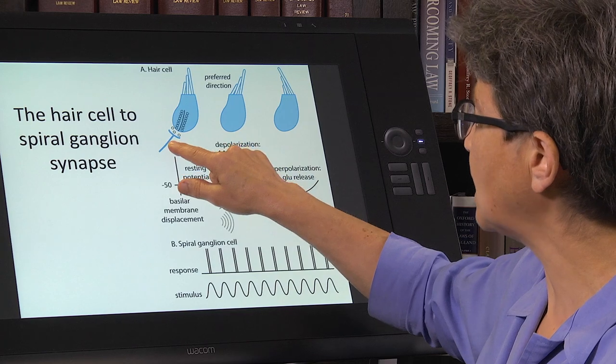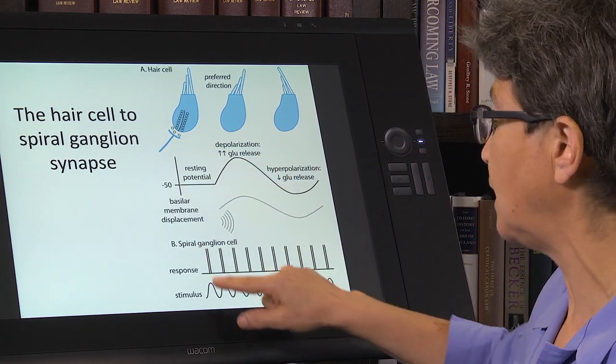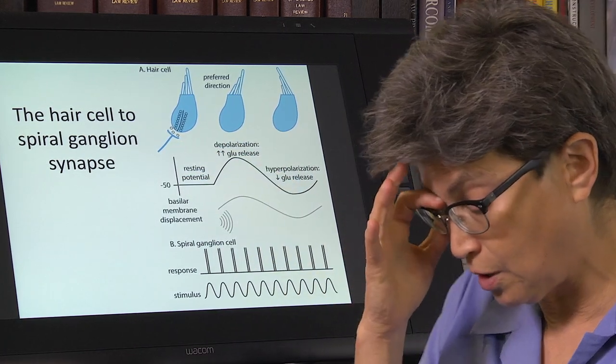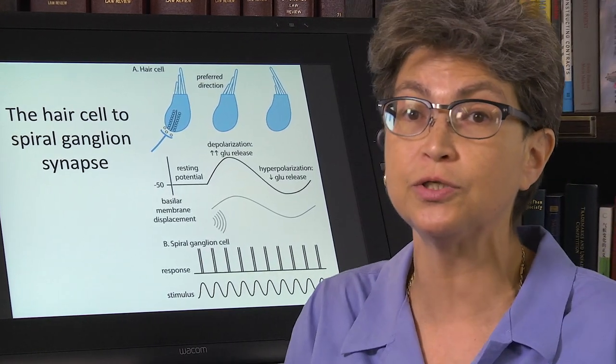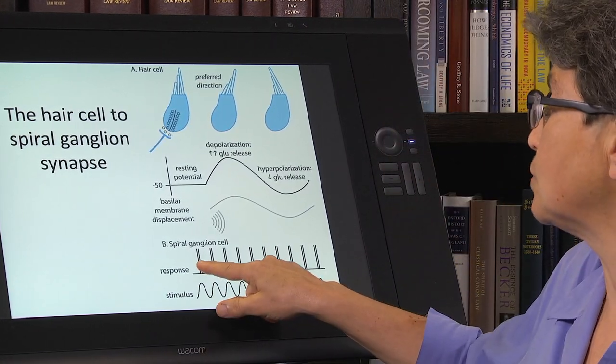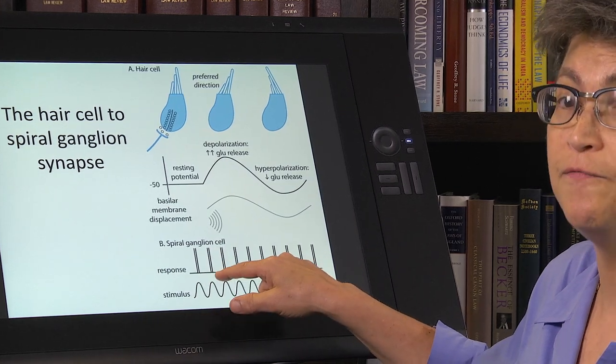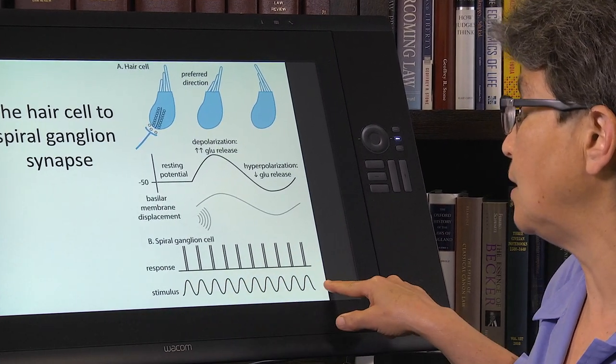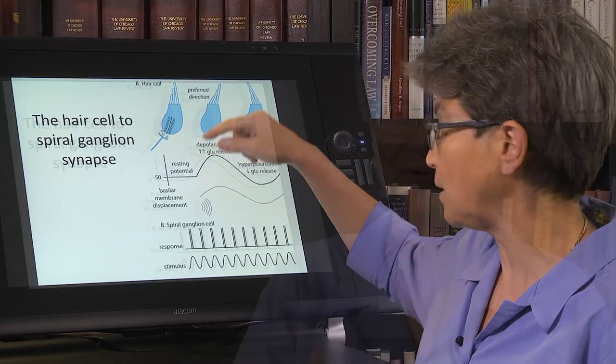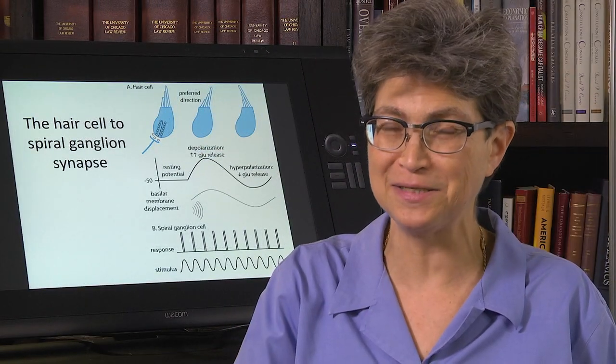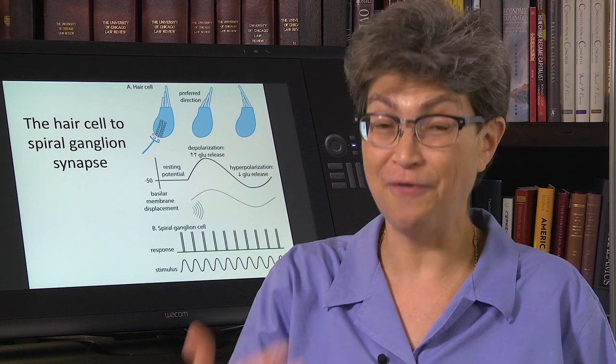The next cell in line is going to simply respond to that. And so up to about one to three kilohertz, the response of the spiral ganglion cell is going to be in phase with the hair cell, with the hair cell response. Past that, the spiral ganglion cell cannot follow.